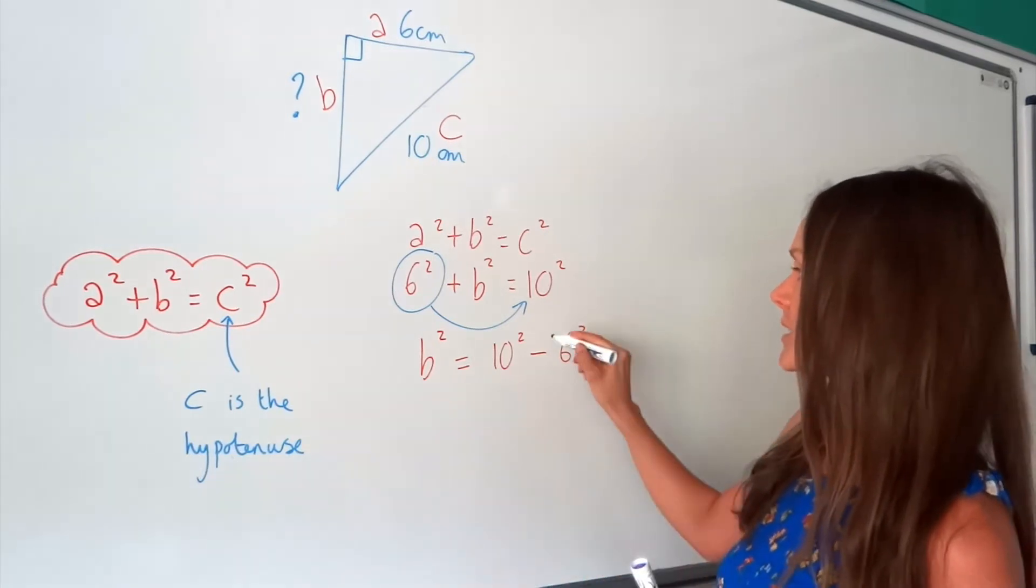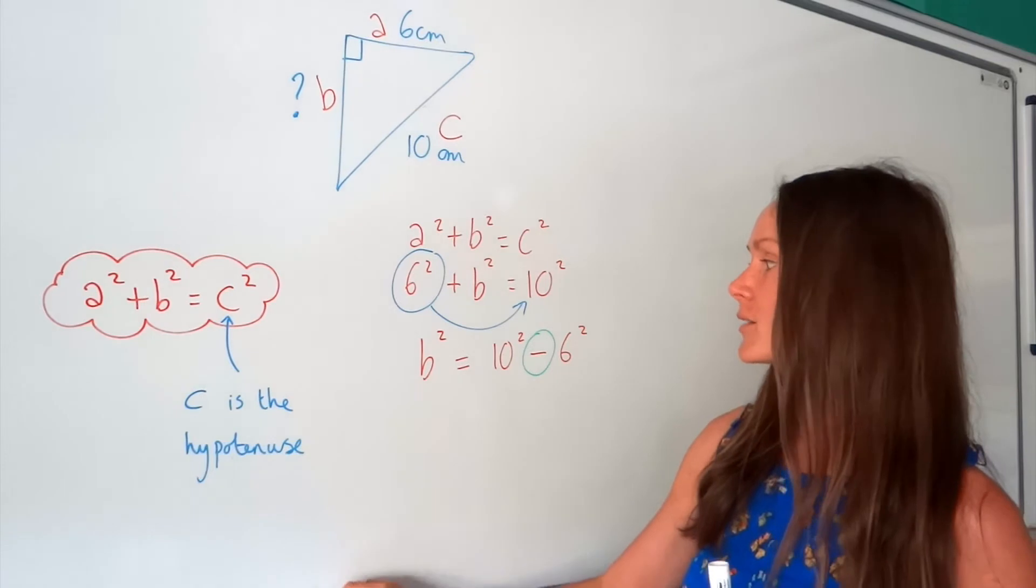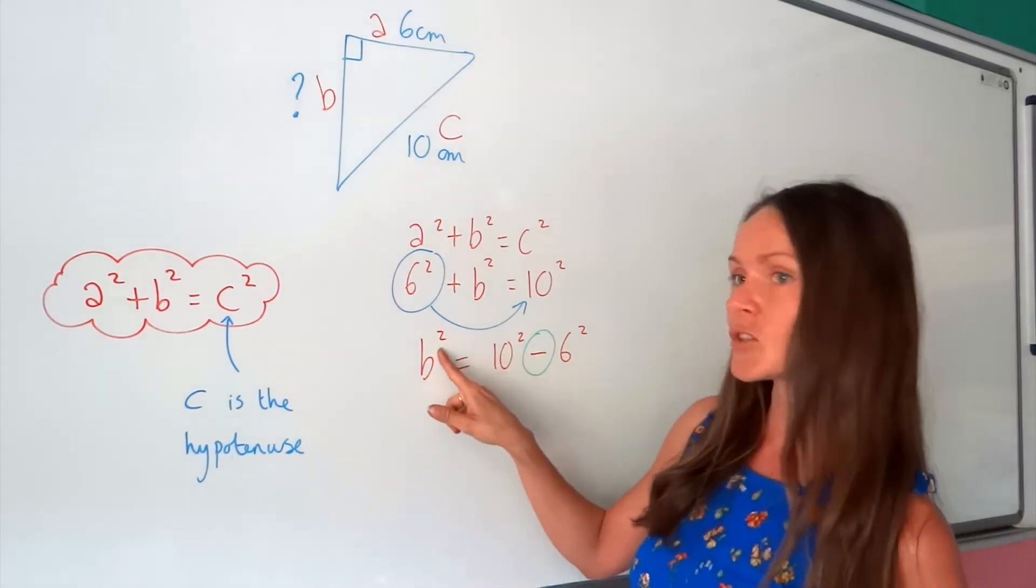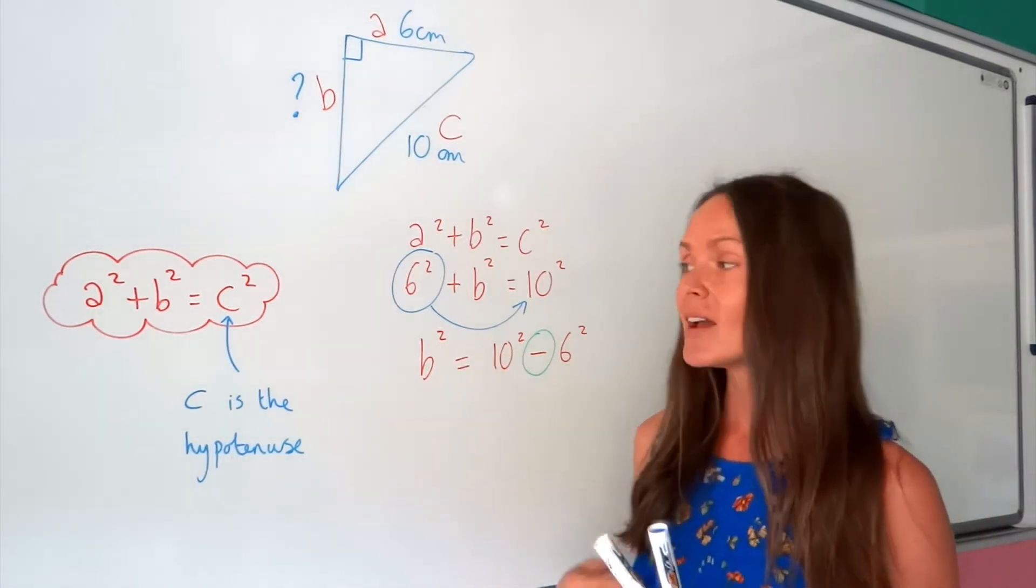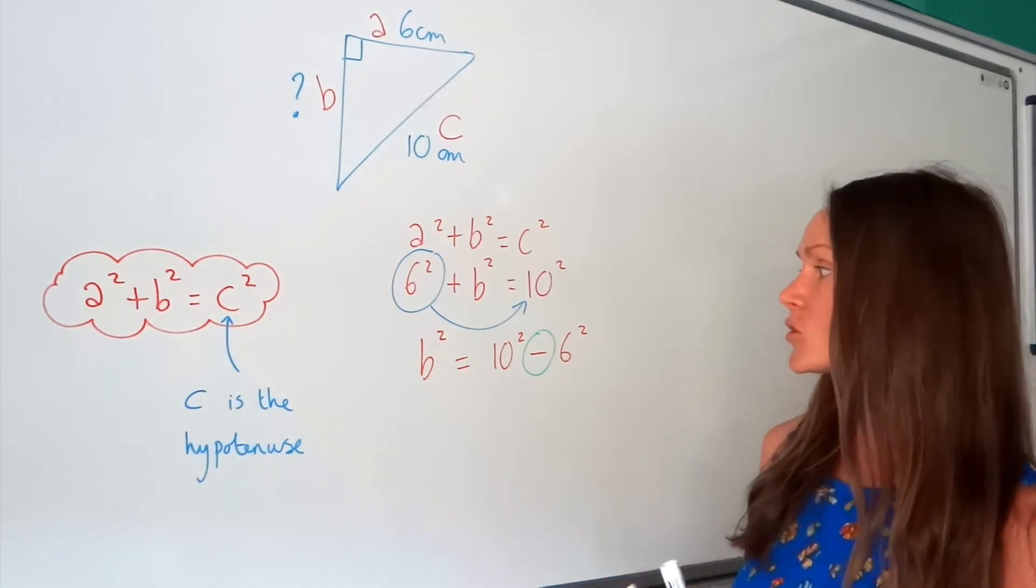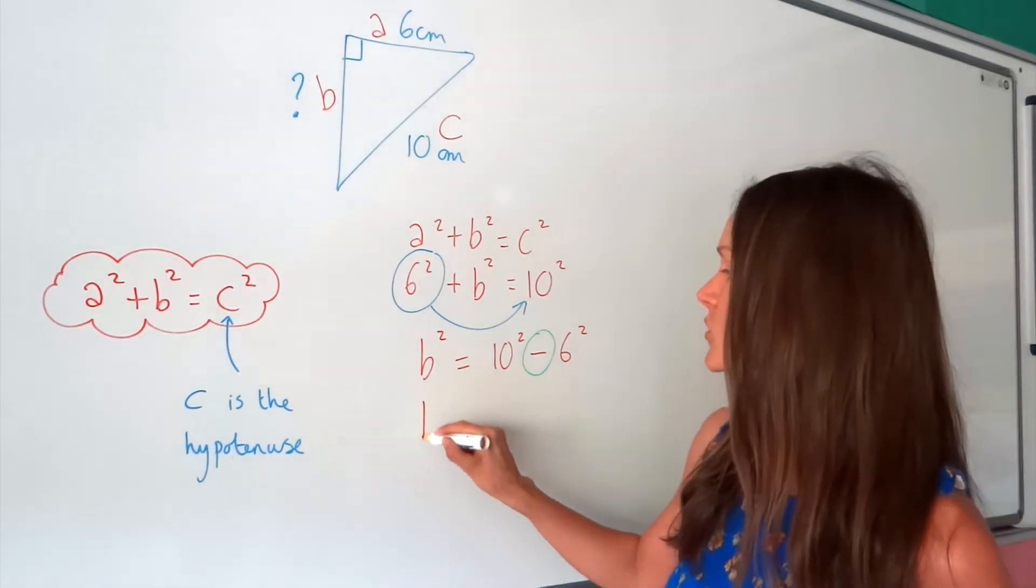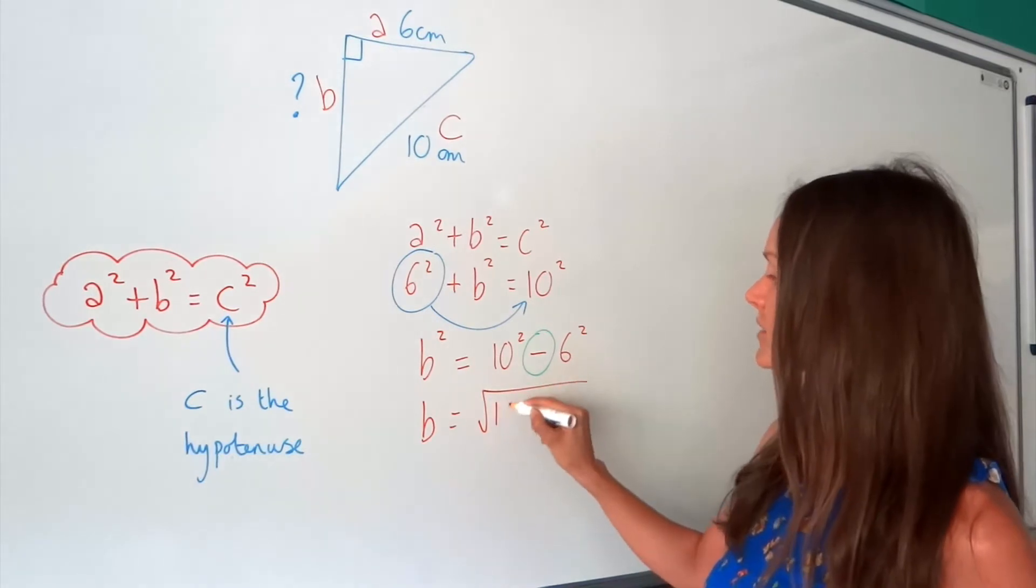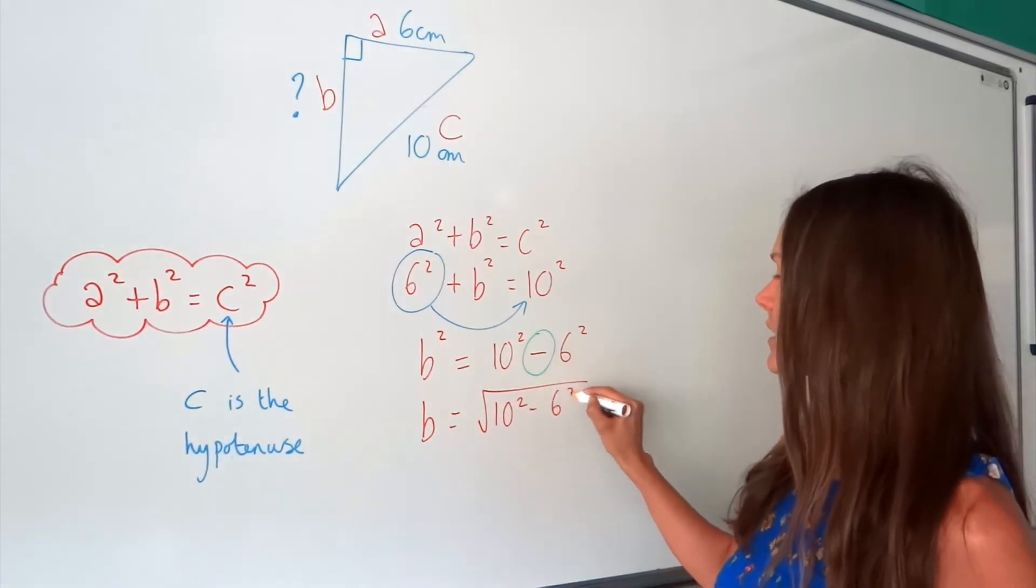Now, don't forget that negative, otherwise you'll get the answer wrong. Now, just like before, to get rid of the square here, you have to do the opposite. And the opposite of squaring is to square root. So we're going to be square rooting all of that that's on the right-hand side.